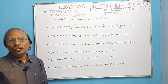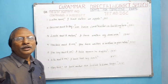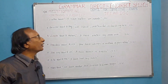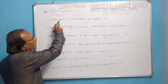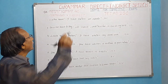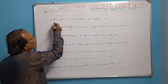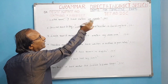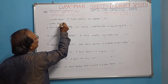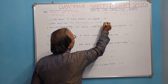In present perfect, 'has' or 'have' is used — 'have' for plural and 'has' for singular. In indirect speech, these change to 'had.' Latha said, 'I have eaten an apple.' 'I' refers to Latha, so the subject becomes 'she.' 'Have eaten' changes to 'had eaten.' Result: Latha said that she had eaten an apple.